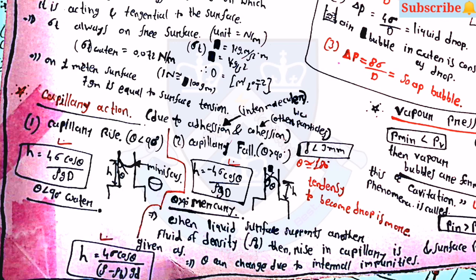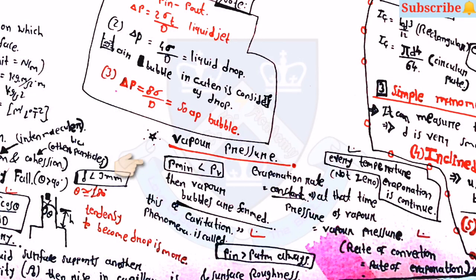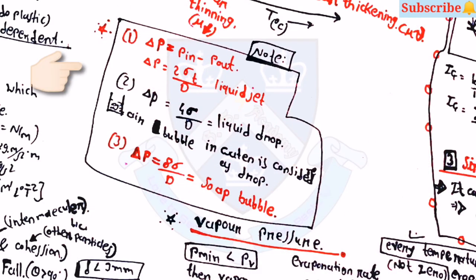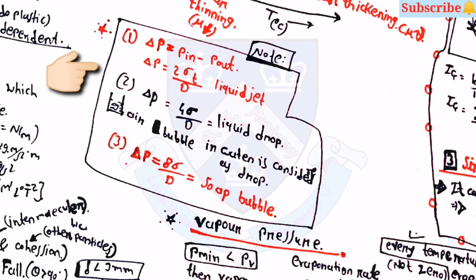This equation is used when the liquid surface supports another fluid of density rho-b. For vapor pressure, p-min is always less than pv for forming bubbles. For cavitation, p-in is greater than p-atmospheric. Delta-p equals p-in minus p-out. Delta-p equals 2 sigma-T by d for a liquid jet; delta-p equals 4 sigma by d for a liquid drop; and delta-p equals 8 sigma by d for an air bubble. An air bubble in water is also considered as a liquid drop.